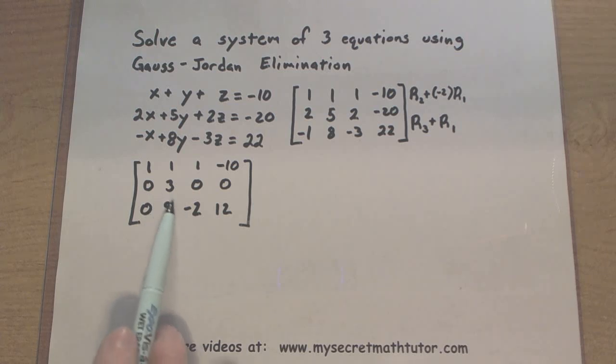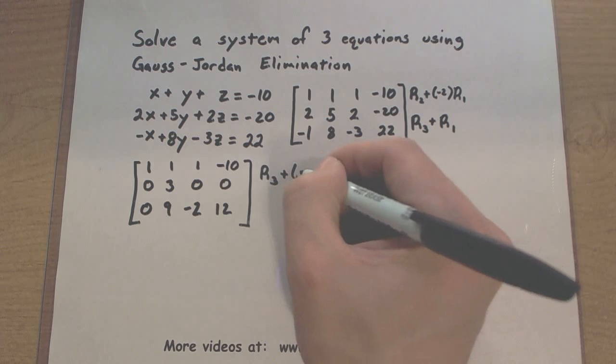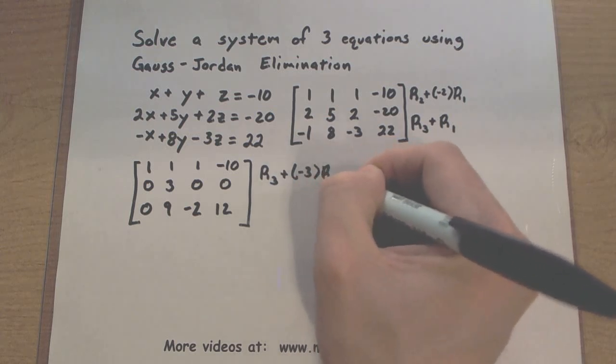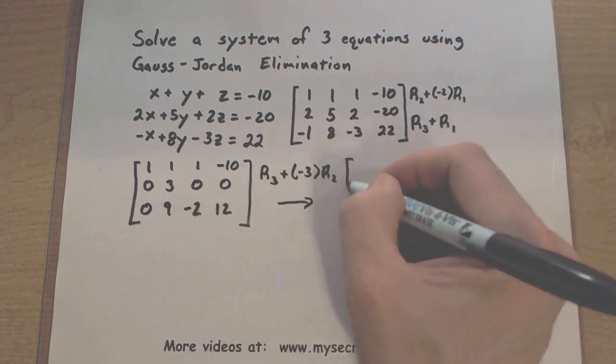Now let's try and get a 0 for the third row. So if we take row 3, we add to it a negative 3 times row 2, this should give us a new row 3. Let's see what it looks like.